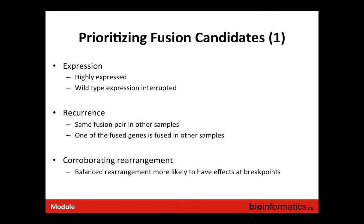A ballpark number of five to ten supporting reads is a reasonable minimum threshold, which would remove ligation artifacts and reverse transcriptase template-switching artifacts. However, something real could still show up in very few reads — it may have low expression but still be relevant, or may have been historically relevant in that tumor.